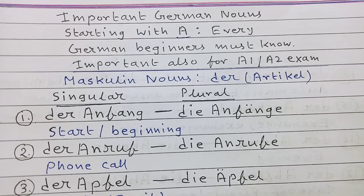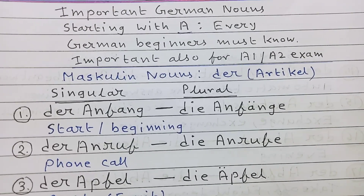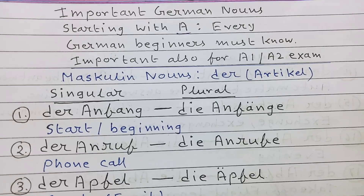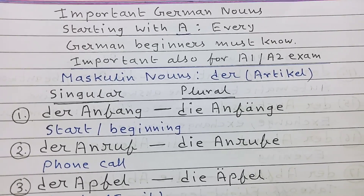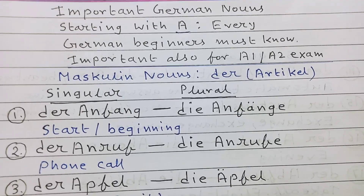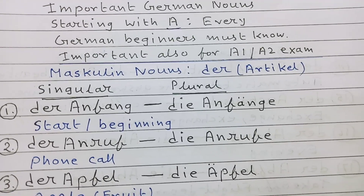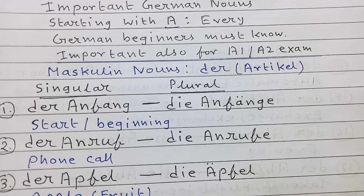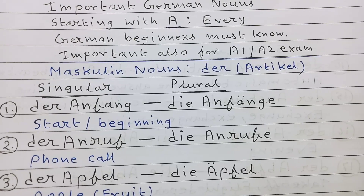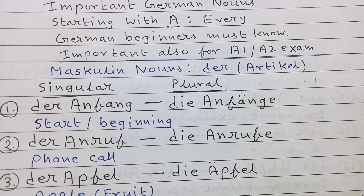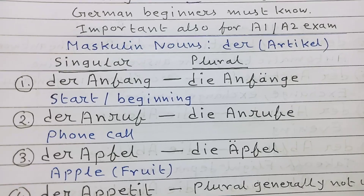Important German nouns starting with A, every German beginner must know. Important also for A1 and A2 exam. Masculine nouns: there is the article, here singular and plural.